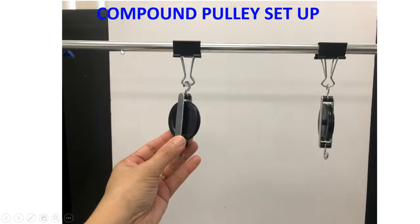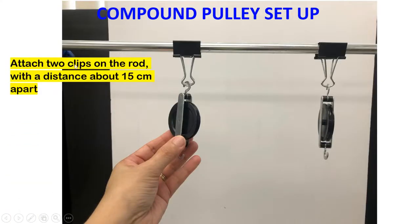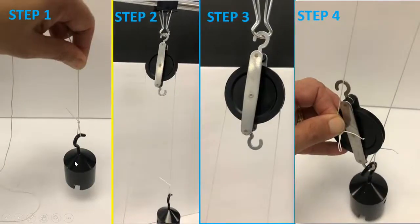Compound pulley setup: attach two clips on the rod with a distance around 15 centimeters apart. Hook a pulley on each clip. Here we have a series of steps.